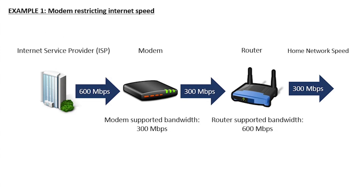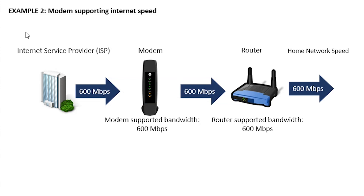Now let's look at another example. In this case, we have 600 megabits per second coming in from our internet service provider, and our modem can support 600 megabits per second. This modem is able to pass the entire internet speed coming from our ISP over to our router — 600 megabits per second. Our router can support 600 megabits per second, so it takes that internet speed and passes it to all the devices in your home network. In the water example, both valves are open all the way, not restricting the internet speed from the ISP at all.